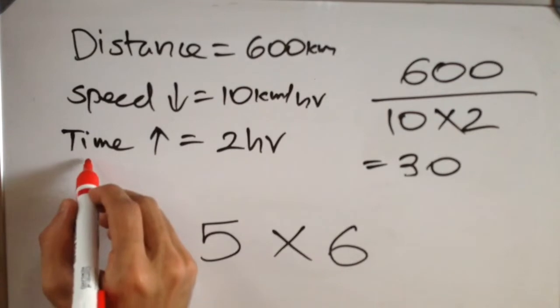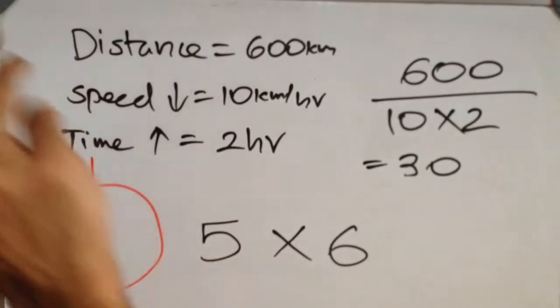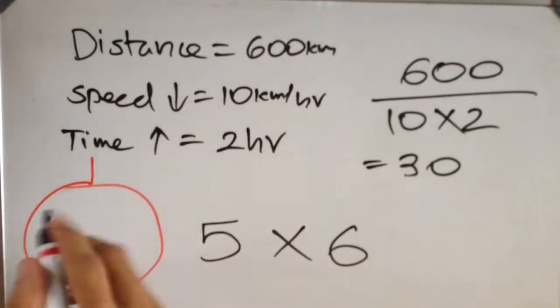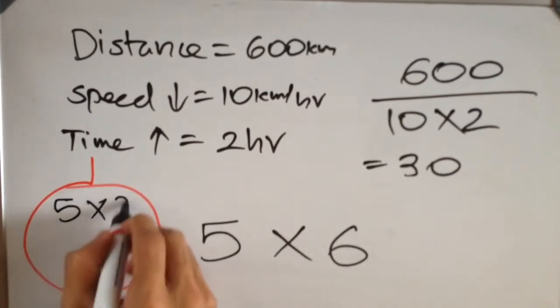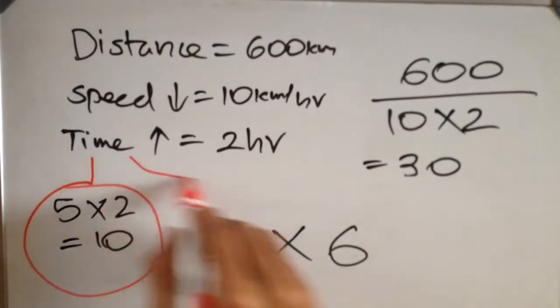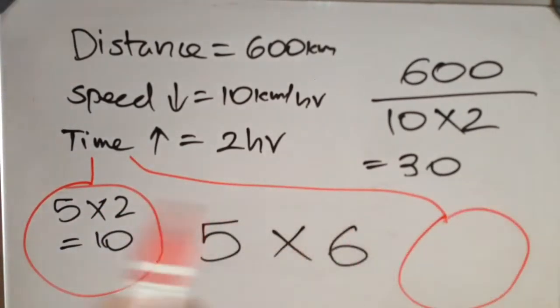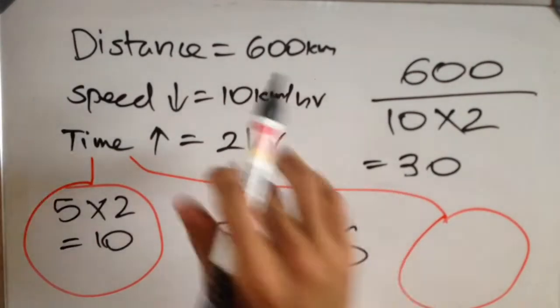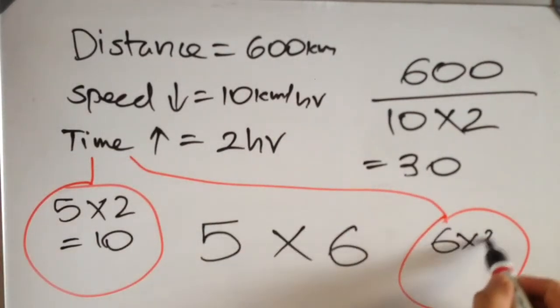Now if we are asked to find out the actual time taken, it will be 5 into 2, so 5 into 2 equals 10 hours. If you are asked to find out the increased time taken, that will be 6 into 2 and the answer will be 12 hours.